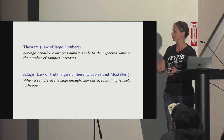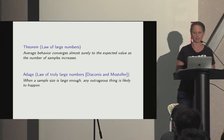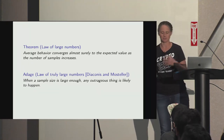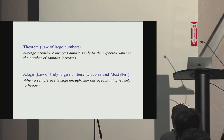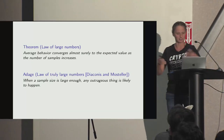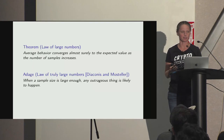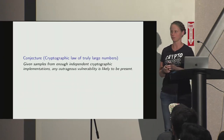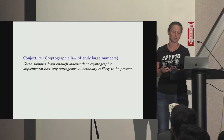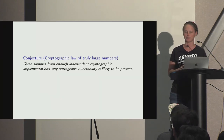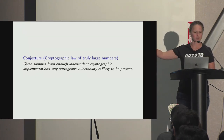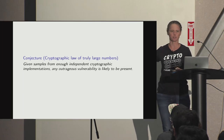There is a counterpoint to this law, formulated by Diaconis and Mosteller: when a sample size is large enough, any outrageous thing is likely to happen. In the cryptographic context, I'd like to formulate a cryptographic law of truly large numbers — if you're given samples from enough independent cryptographic implementations, any outrageous vulnerability is likely to be present. This is my conjecture, based off of my publication record. This is how I got tenure.